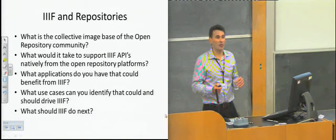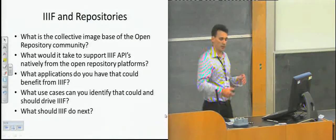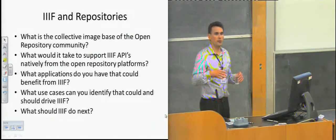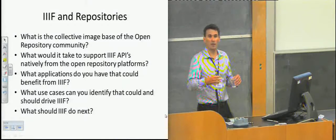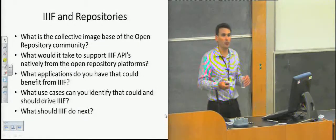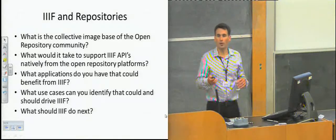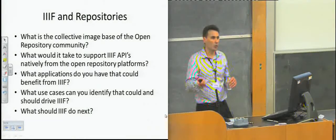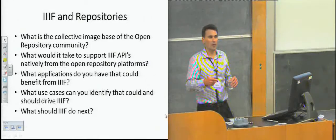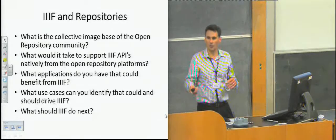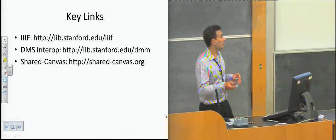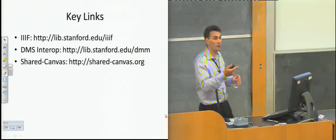Do you have specific use cases that we should be considering? One of the things that surprised us — because we'd been coming at this out of the manuscript space — is that as soon as we published the image API we got a number of use cases from science, technology, and medicine saying this would be great for looking at images of cell trays. The answer is no, we hadn't thought about that, but we know there are additional use cases. Finally, what should IIIF do next? If you think that this makes sense and there's forward progress to be made, we're just coming to the end of the first year initiative. If you think there's a way to do involvement, if there's a funder that might be there, if there's a dissemination event you have in mind, please come talk to me or Simeon or Rob. And that's it — some key links on IIIF, DMS, and Shared Canvas.